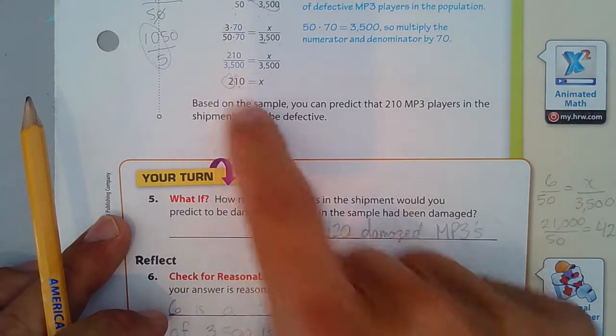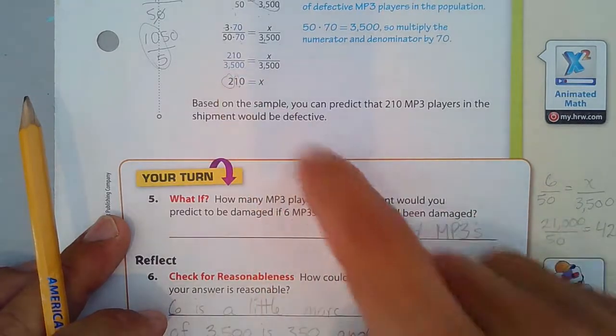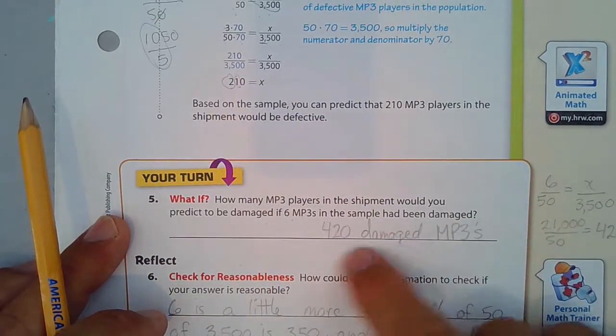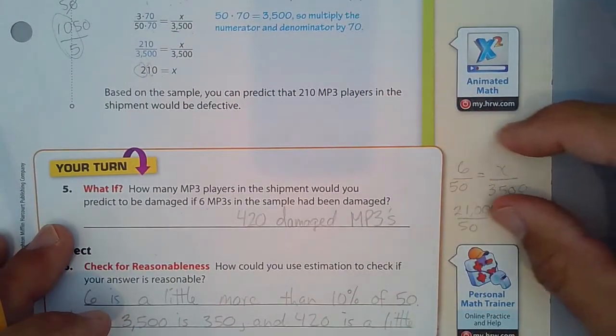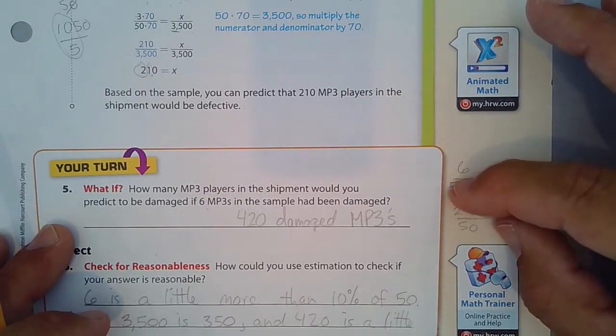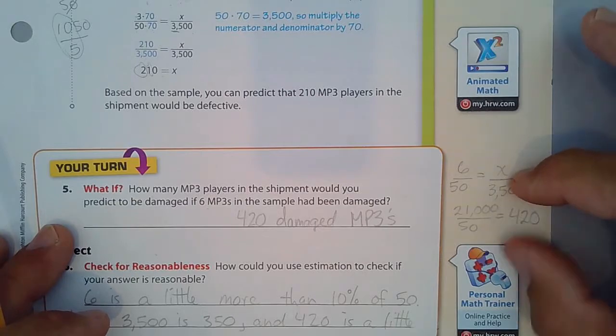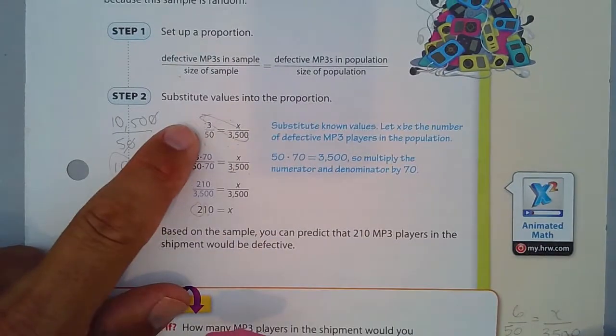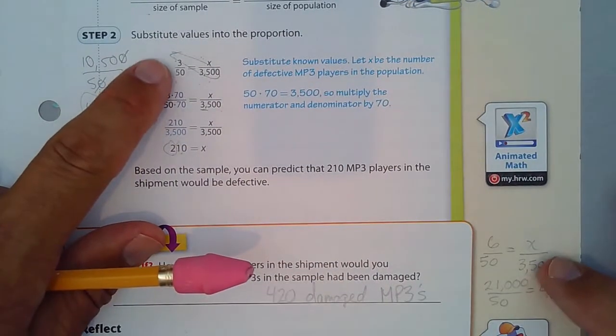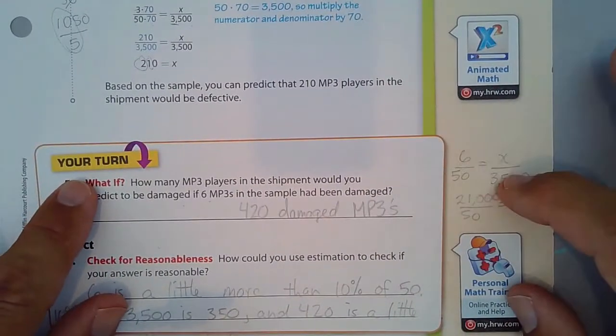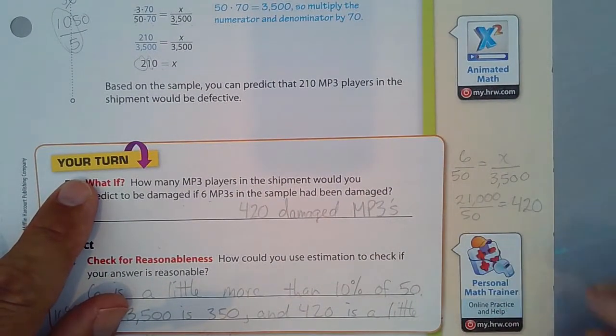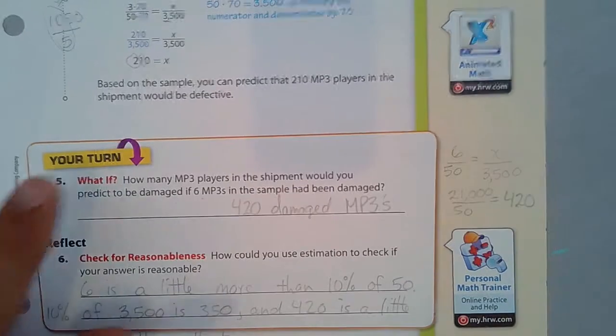Or, you could make another proportion here. Once again, 6 out of 50 equals x over 3,500. This is just like this. These two are very similar. And I cross multiply. I got 21,000 divided by 50 is 420. There's two different ways of getting the same answer.